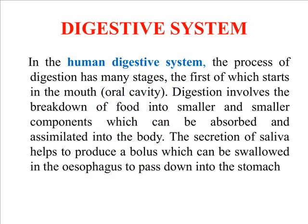In the human digestive system, the process of digestion has many stages. The first of which starts in the mouth, also known as the oral cavity. Digestion involves the breakdown of food into smaller and smaller components which can be absorbed and assimilated into the body. The secretion of saliva helps produce a bolus which can be swallowed and passed down the esophagus into the stomach.